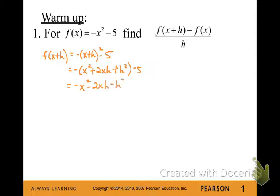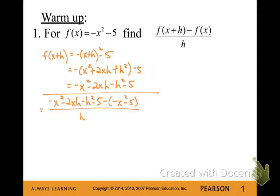Distribute that negative and then bring the negative 5. So now we're going to take that expression and plug it into the difference quotient formula, minus f(x) all divided by h. So we'll clean up the numerator by distributing the negative, giving positive x squared plus 5. And now let's combine like terms in that numerator.